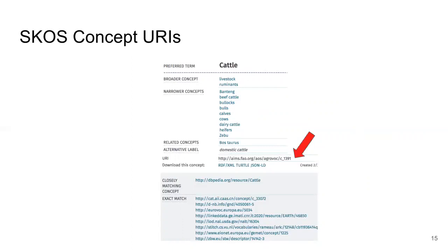URIs are very important. In this example, the concept ID is C_1391 — the very last piece of the URI. A concept ID like C_1391 is opaque; there's nothing about that ID which would prompt me to think that must mean cattle. The vocabulary creator could instead have used a semantically meaningful identifier like 'cattle'. But then what would happen if the preferred label changed? At best, the URI may become misleading or confusing as it would appear out of sync with the preferred label. Also in a multilingual thesaurus, which language would be chosen for a semantically meaningful concept ID?